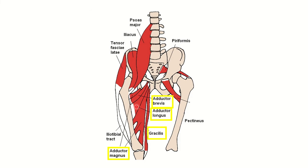Here we can see the femur and different muscles attached to the femur. The groin is in the upper part of the thigh. We can see different muscles such as the adductor longus muscle; above the adductor longus there is the adductor brevis muscle, and below the adductor longus there is the adductor magnus muscle. The adductor longus lies in the upper part of the thigh, that is in the groin region.